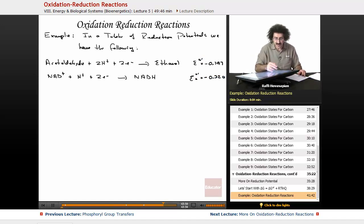The question is, what happens when these species are brought into contact with each other, when I have some acetaldehyde, some ethanol, some NAD plus, and some NADH? What's going to happen? Well, take a look at the reduction potentials.